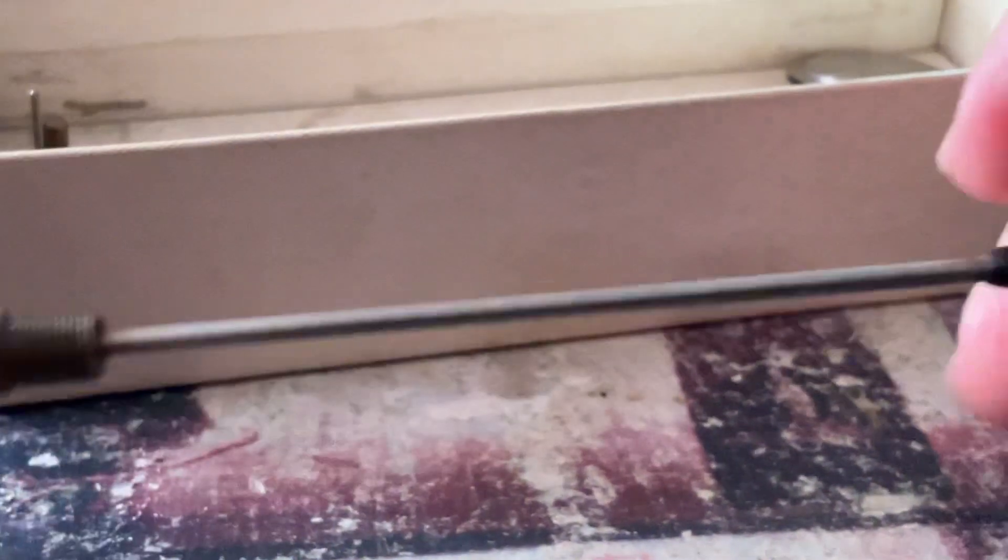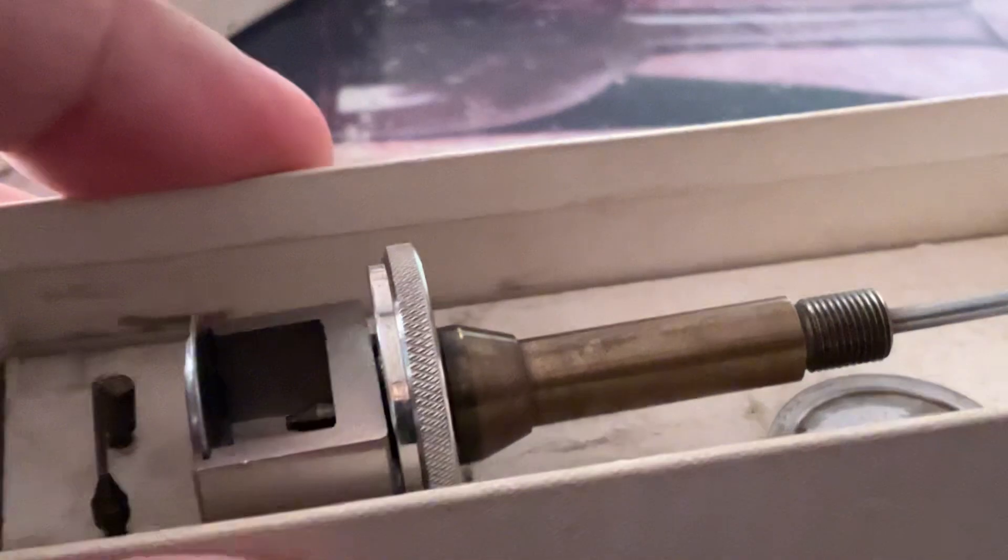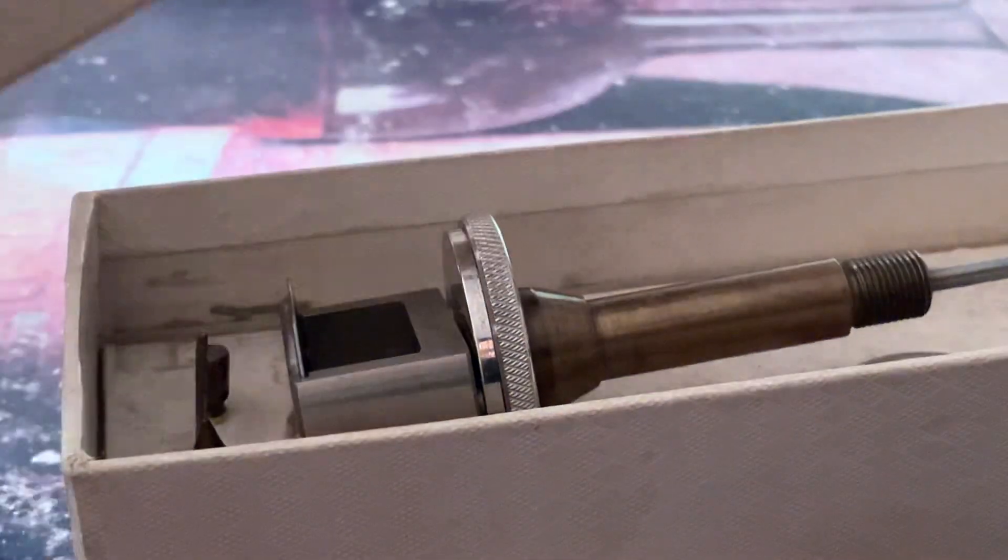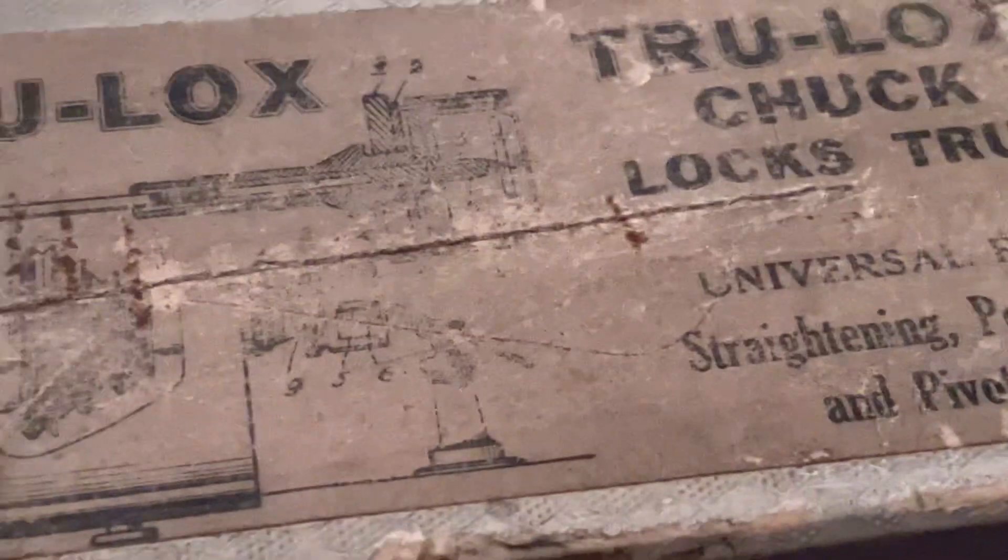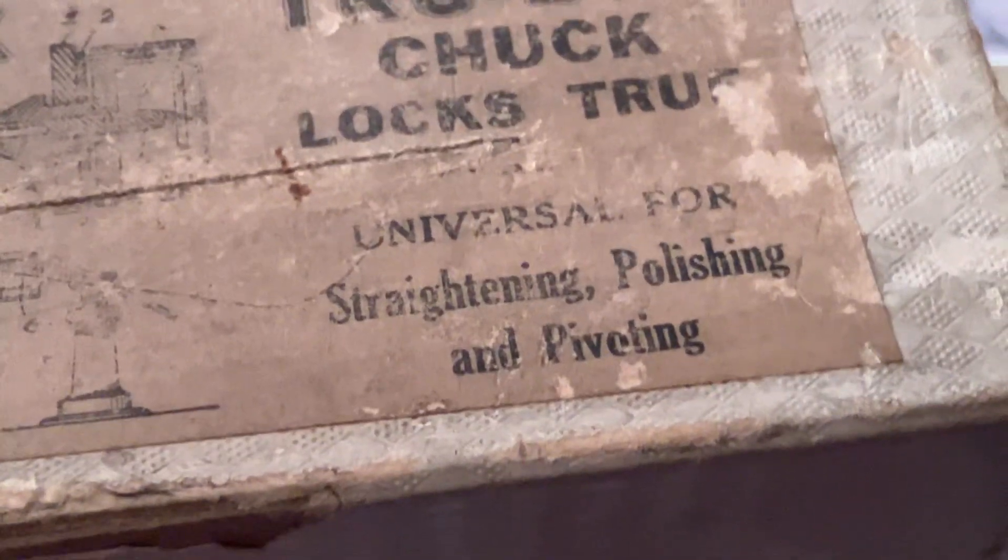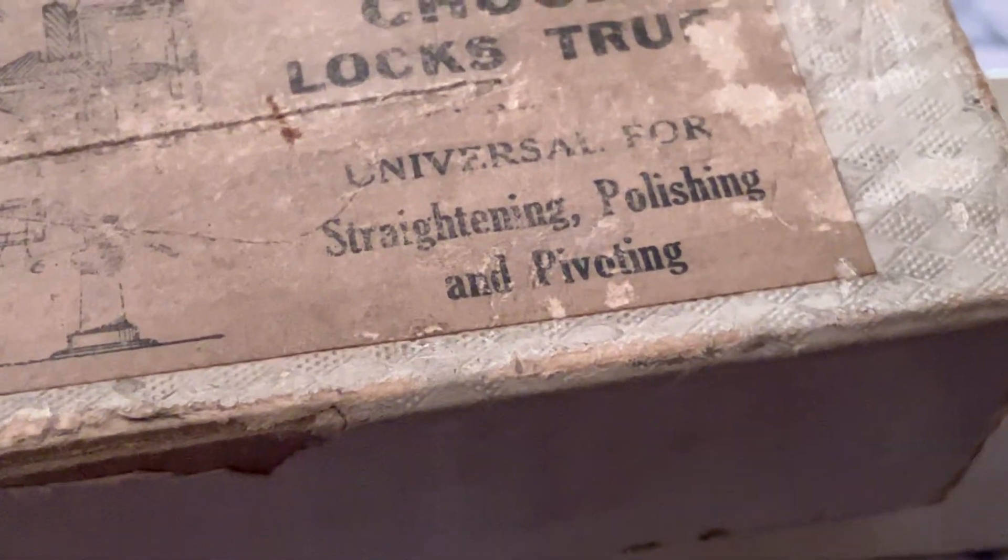Right there. And we just lay that inside the box. Like so. And it is called a true lock. True lock chuck. And it says locks true. Universal for straightening, polishing, and pivoting. It's not an L there. Pivoting. So that's a new tool. I'm not even going to ask you what is this tool.